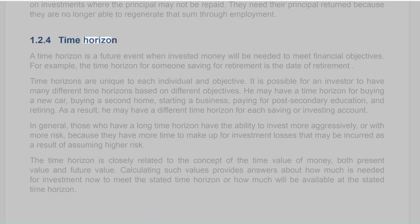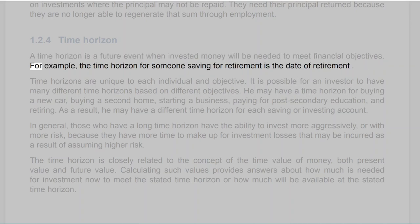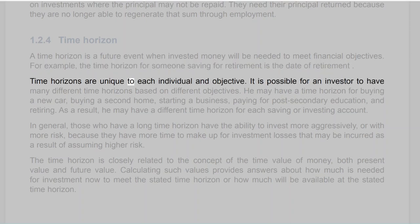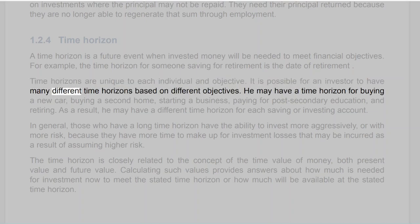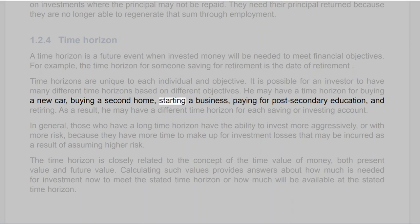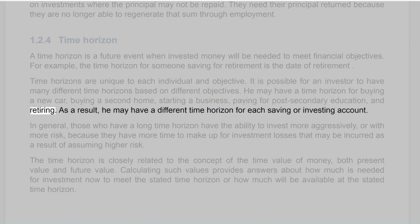Section 1.2.4: Time Horizon. A time horizon is a future event when invested money will be needed to meet financial objectives — for example, the time horizon for someone saving for retirement is the date of retirement. Time horizons are unique to each individual and objective. An investor may have many different time horizons based on different objectives, such as buying a new car, a second home, starting a business, paying for post-secondary education, and retiring, each potentially with a different saving or investing account.